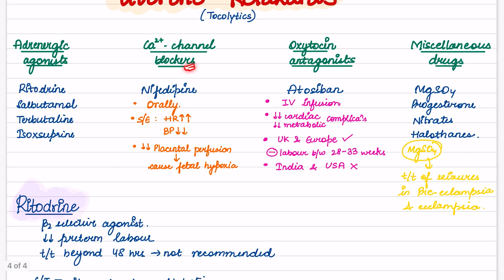Calcium channel blockers: nifedipine, it is given orally. Side effect is increased heart rate or decreased BP. There is decreased placental perfusion which can cause fetal hypoxia. In atosiban that is oxytocin antagonists, it is given IV. It causes decreased cardiac and decreased metabolic complications. In UK and Europe it is given but in India and USA it is banned. It can inhibit labor between 28 to 33 weeks.